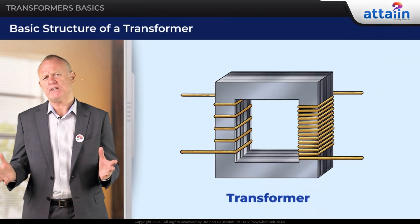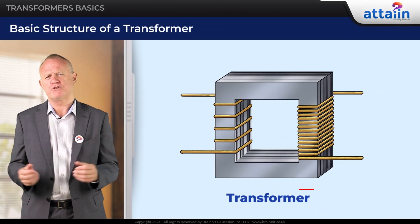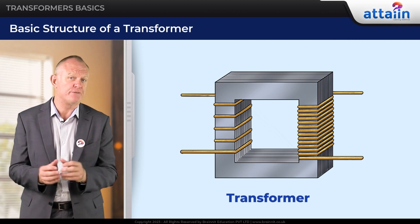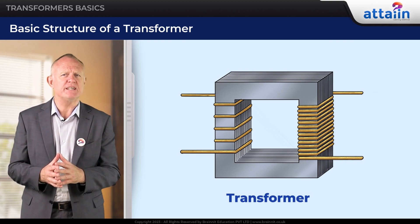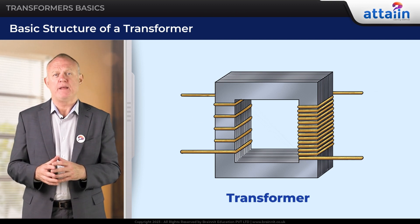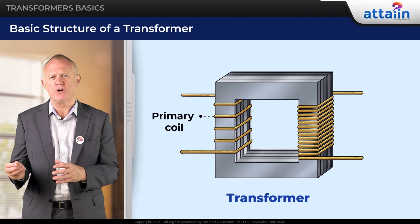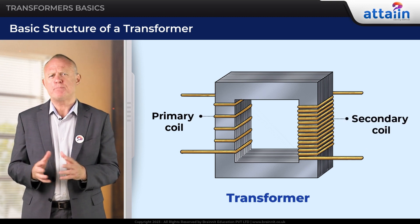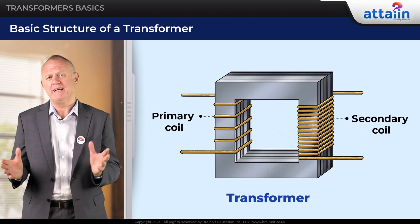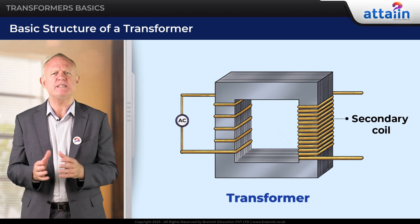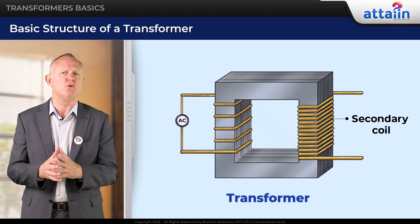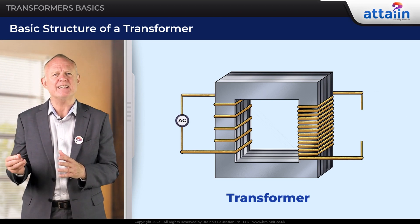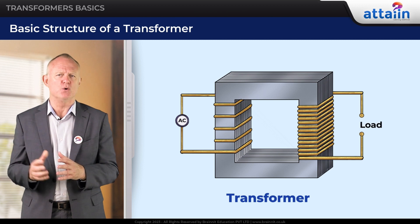Basic structure of a transformer. A transformer consists of two coils: the primary coil and the secondary coil. The primary coil is connected to an alternating current source, while the secondary coil is connected to the load.